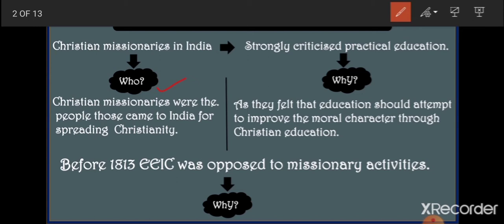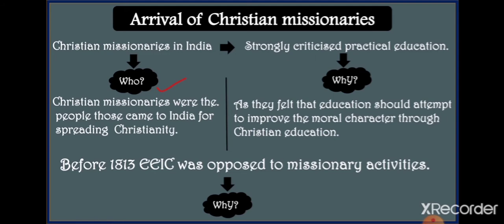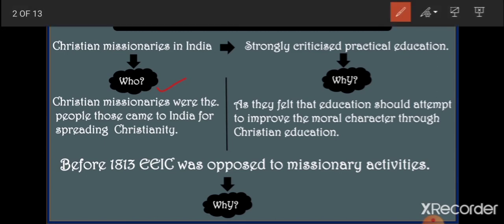Some people of India also accepted Christianity — they turned their religion from Hindu or Muslim to Christianity. Basically, Christian missionaries were on a mission to spread their religion in India. But since British officers were totally focused on practical education, Christian missionaries strongly criticized this approach and opposed the propagation of practical education.